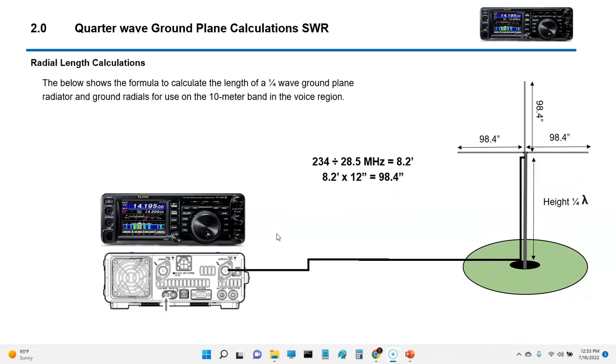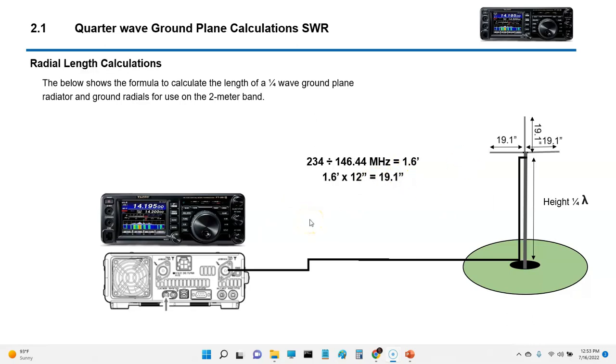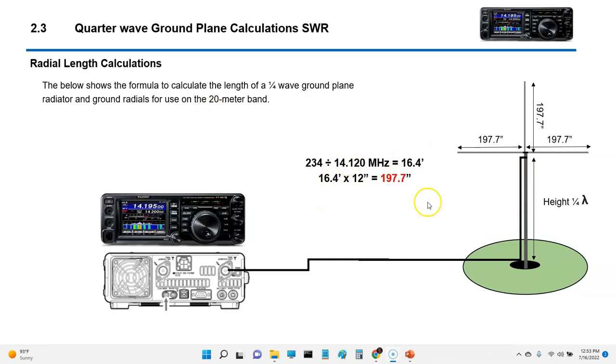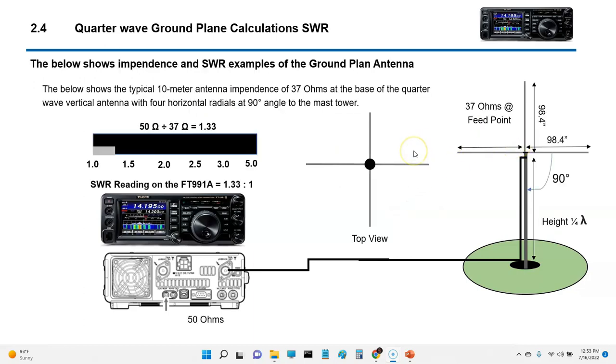So, how to calculate frequency real quick. It's very simple. Just take 234 and divide it by the frequency. And that will give you the length of each radiator, vertical and horizontal. And then you take that and you multiply that by 12, which will give you the number of inches. Here's one for 2 meter. Same formula. CB radio. This one here is 20 meters. Look how tall that is. That's 197 inches, 16 feet.